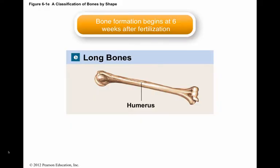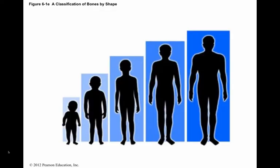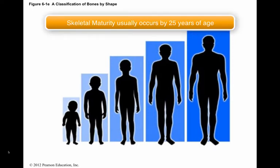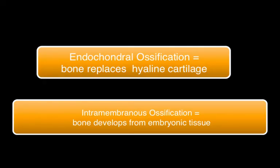The bony skeleton begins to form at about 6 weeks after fertilization, when the embryo is about a half inch long. During development, the bones undergo an increase in size. Bone growth continues through adolescence, and portions of the skeleton generally don't stop growing until about age 25. Two major forms of ossification are endochondral ossification and intramembranous ossification. In endochondral ossification, bone replaces existing cartilage. In intramembranous ossification, bone develops directly from mesenchyme, which is embryonic tissue, or from a fibrous connective tissue.